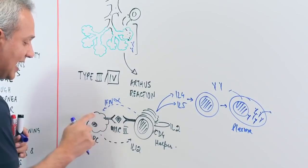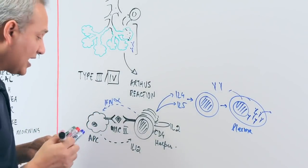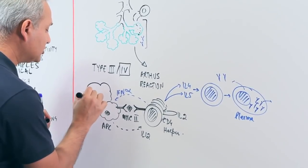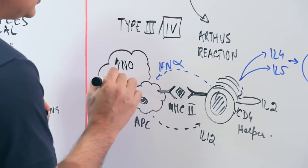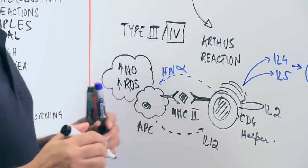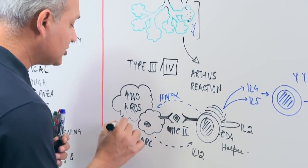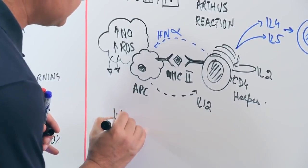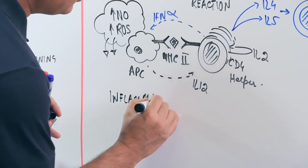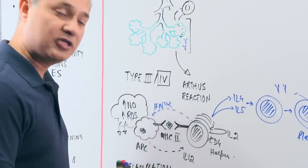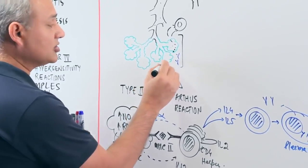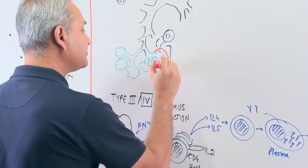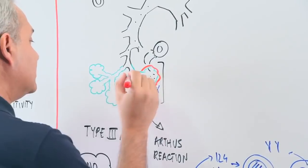When interferon gamma is released, it activates macrophages. An activated macrophage is dangerous — it produces more nitric oxide, more reactive oxygen species, and does more killing. It also releases chemoattractants and cytokines that cause local inflammation. Neutrophils come in, and damage begins. When that damage is repaired, scarring and fibrosis result.